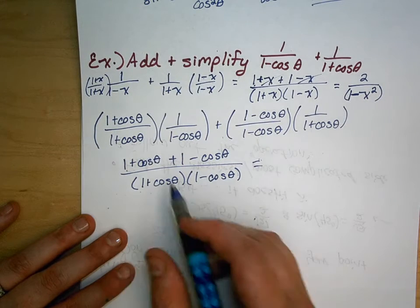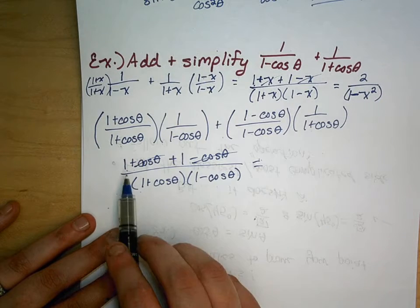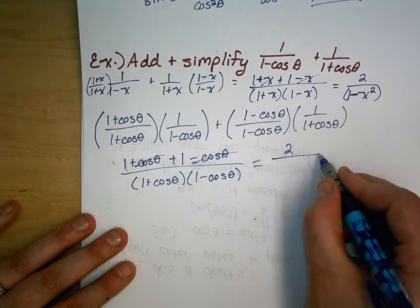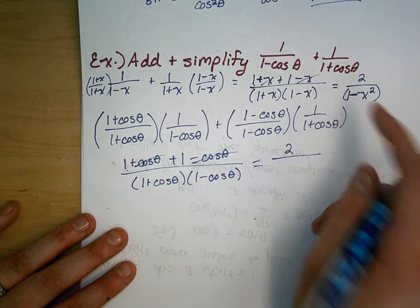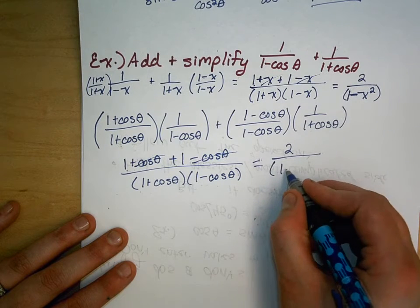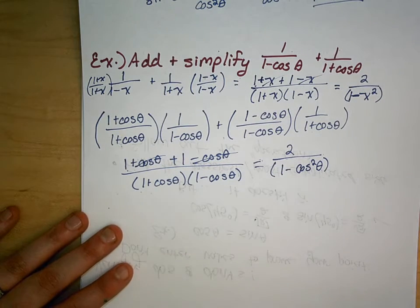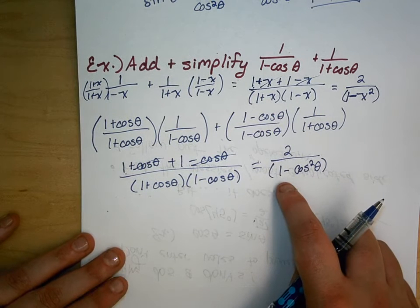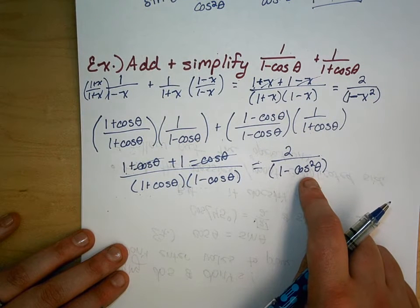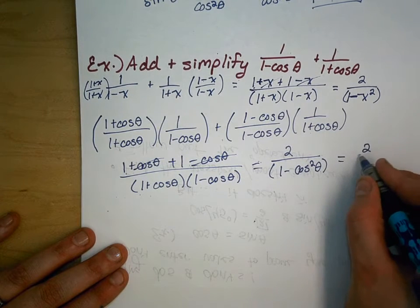The plus cosine and minus cosine cancel out. We get 1 plus 1, which is 2, over — and this denominator behaves exactly like 1 minus x squared — so we get 1 minus cosine squared theta. Now that I've added them together, I need to simplify. I know that 1 minus cosine squared theta from the Pythagorean identity gives me sine squared theta.